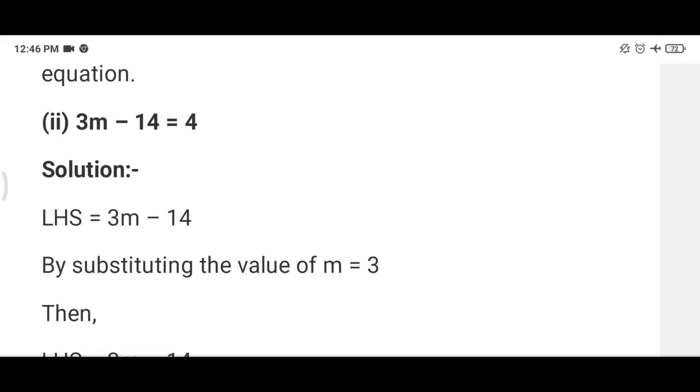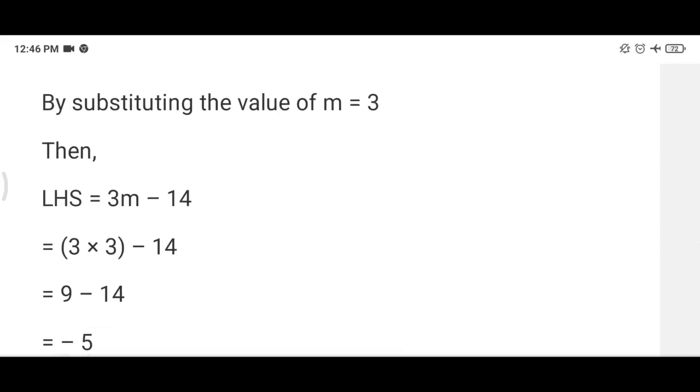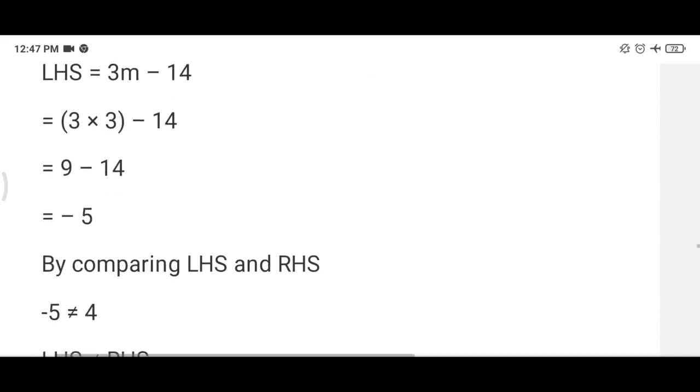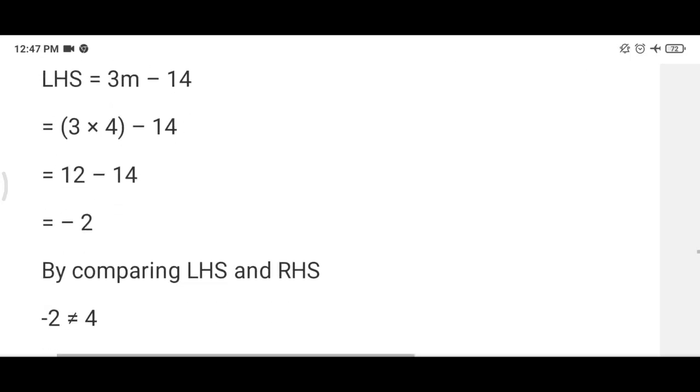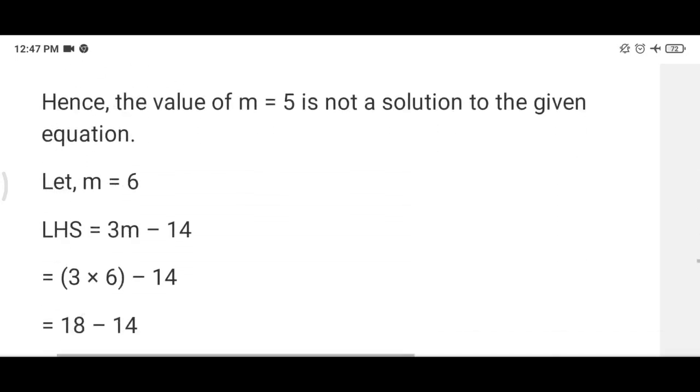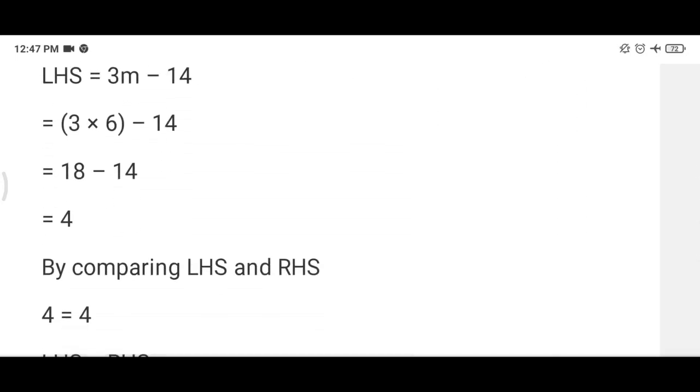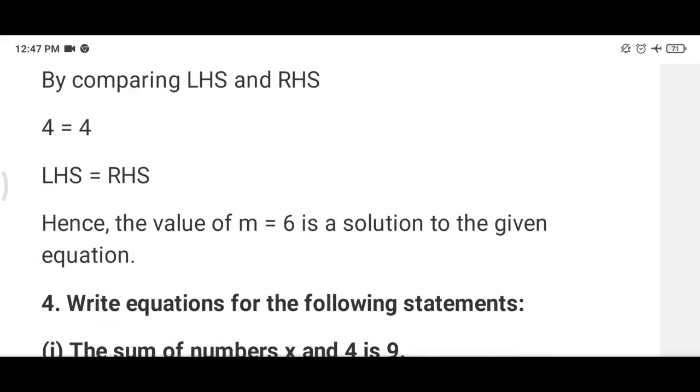In second part 3m minus 14. We will put values. First we put 3, 3 into 3 is 9, 9 minus 14. Then we have put 4, then we got minus 2. Then we put 5, we get 1. Then we put 6, we get 4. Now you have to see, when we put 3, no. 4, no. 5, no. 6 yes. When we put 6, we get 4. And the right hand side is also 4. Now this value is satisfying. So that's why we will write m is equal to 6 is the solution of the equation.